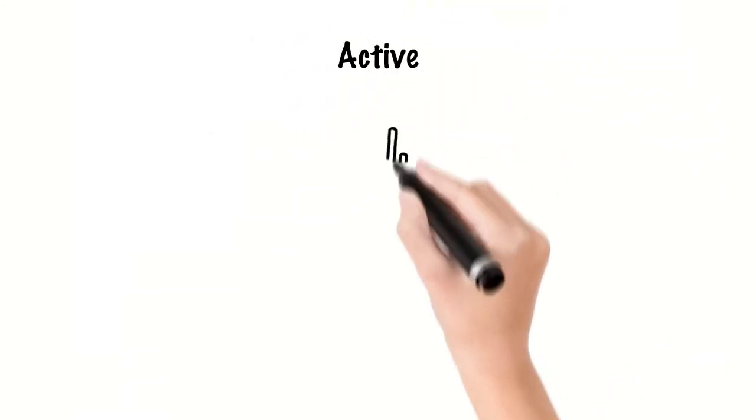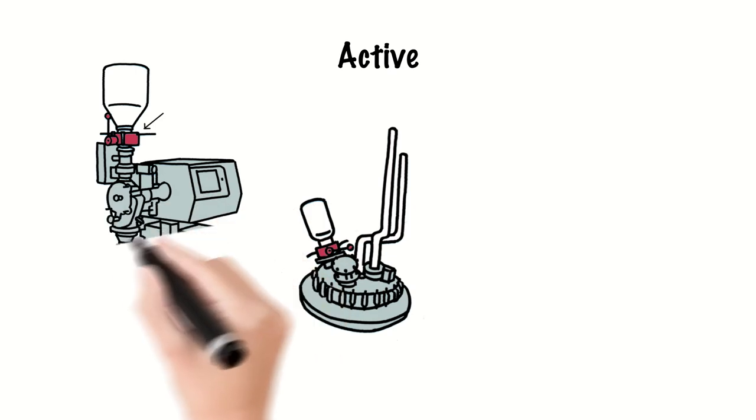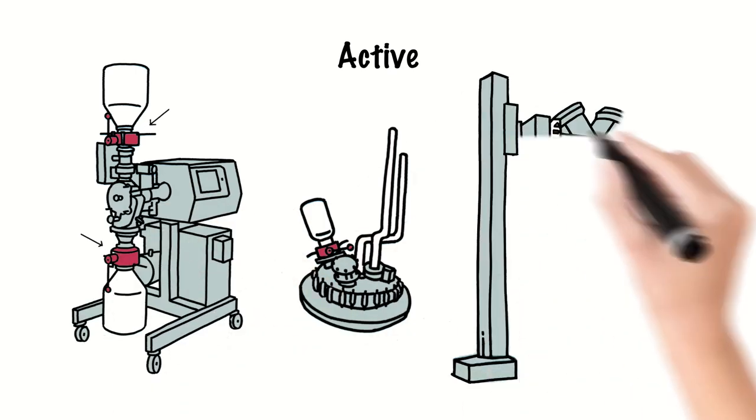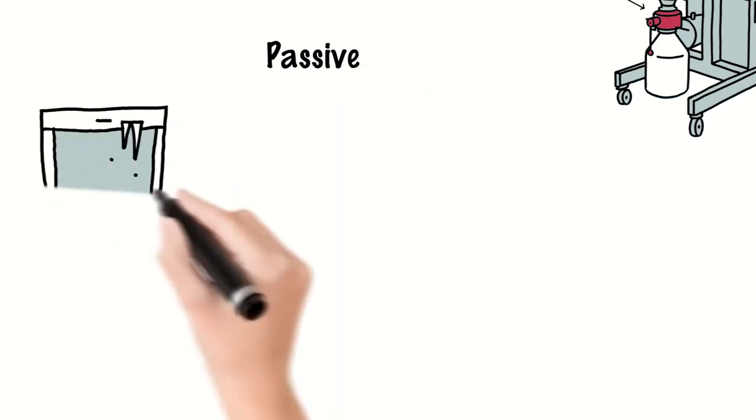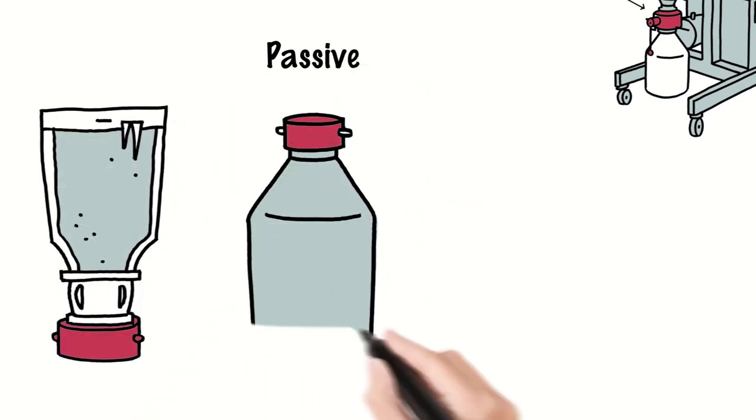The active half is typically attached to the process machine such as a reactor vessel, mill or tablet press and the passive half to the mobile container, charge bag, charge bottle or IBC.